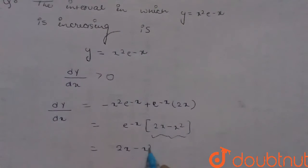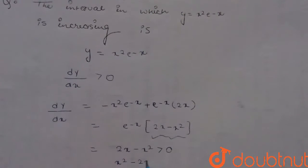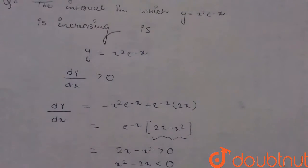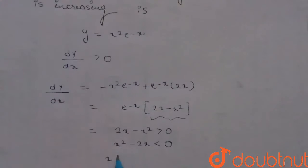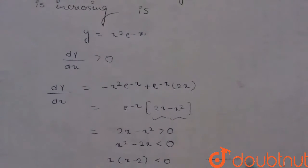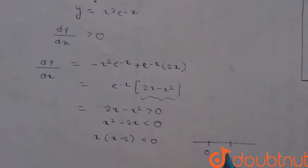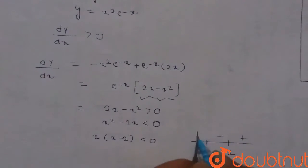x squared minus 2x should be less than zero. So factorize it: x into x minus 2 should be less than zero. So draw the number line: 0, 2, plus, minus, plus.